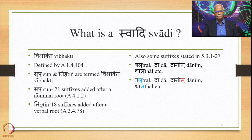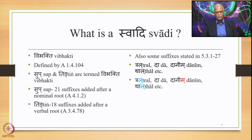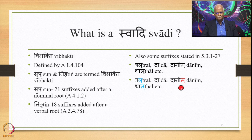In addition, there are some more suffixes stated in 5.3.1 to 27, for example Tral, Da, Danim, Thal, etc. These are also termed Vibhakti. In the displayed list, La and Ma are marked in different colors only to indicate that they are markers — La are the markers and Ma is not the marker. These colors do not play any other function here.